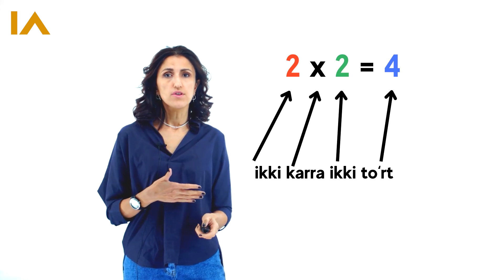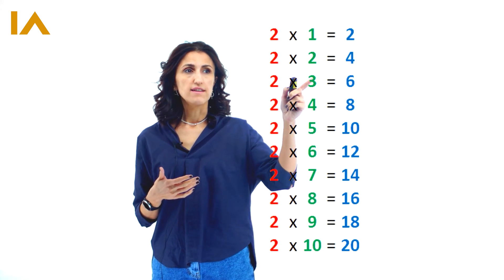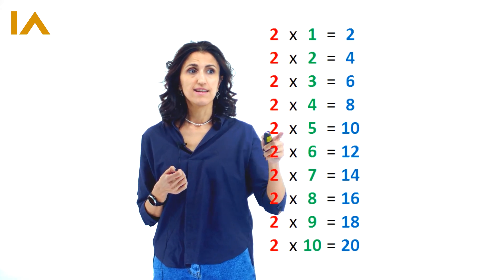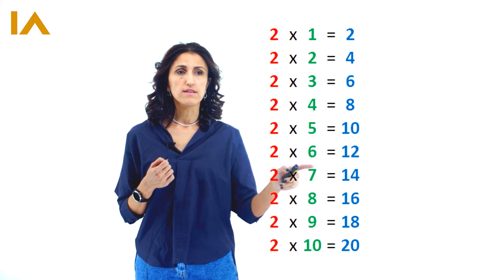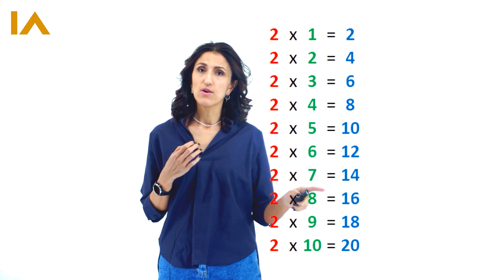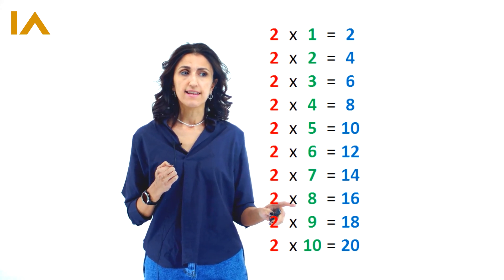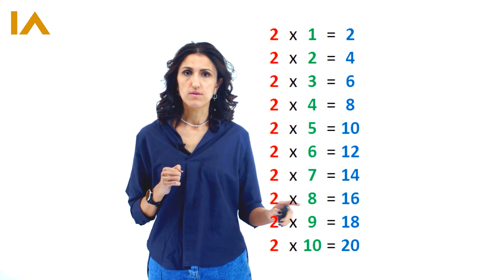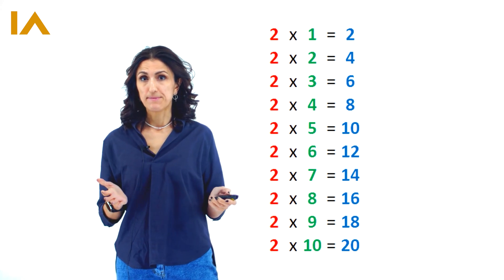Iki karra üç, altı. Iki karra tor, sakkiz. Iki karra beş, on. Iki karra altı, on iki. Iki karra yeti, on tor. Iki karra sakkiz, on altı. Iki karra doqqız, on sakkiz. Iki karra on, yirmi.